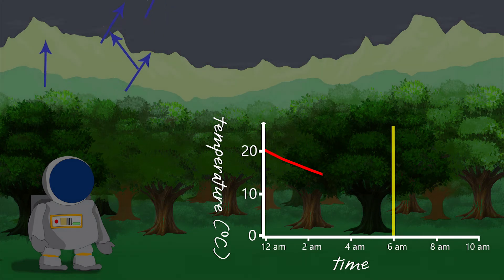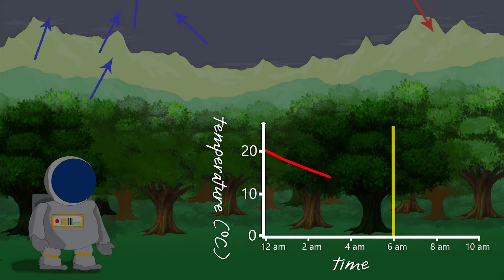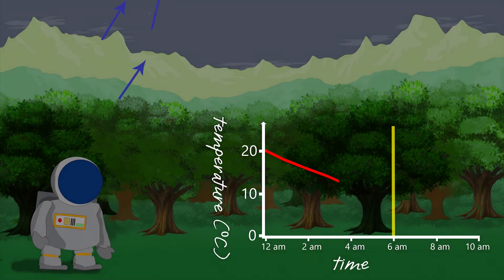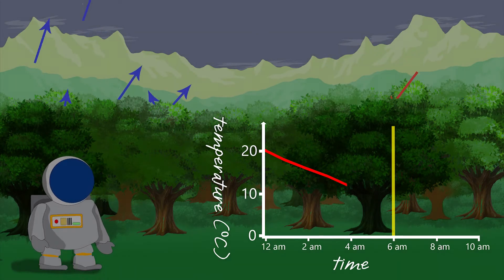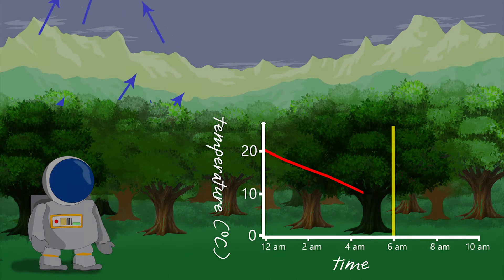At sunrise, we do start to receive solar radiation, but it is very weak, and we're still losing more heat than we're gaining. Therefore, the rate of cooling slows, but it is still cooling.